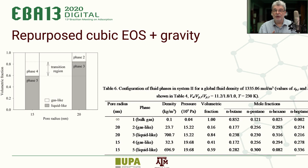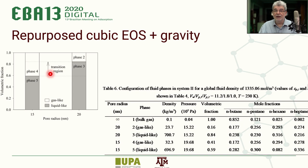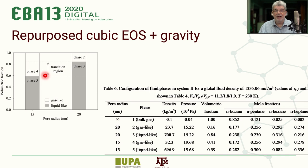Here is an example of the extended Peng-Robinson equation of state applied to a case with two different pore sizes, where within each pore we found a region containing liquid and a region containing vapor. By combining the effect of confinement and gravity, we were able to predict a transition region that occurs within real petroleum reservoirs — a region where at the same level within the reservoir you may find both liquid and vapor.